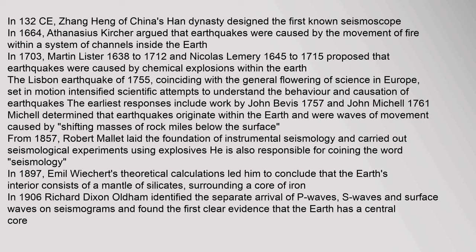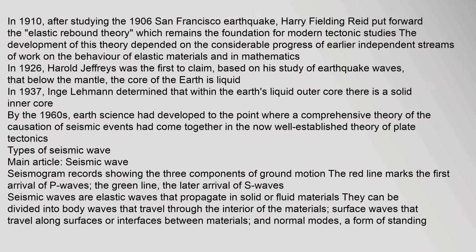From 1857, Robert Mallet laid the foundation of instrumental seismology and carried out seismological experiments using explosives. He is also responsible for coining the word 'seismology.' In 1897, Emil Wiechert's theoretical calculations led him to conclude that the earth's interior consists of a mantle of silicates surrounding a core of iron. In 1906, Richard Dixon Oldham identified the separate arrival of P waves, S waves, and surface waves on seismograms and found the first clear evidence that the earth has a central core.